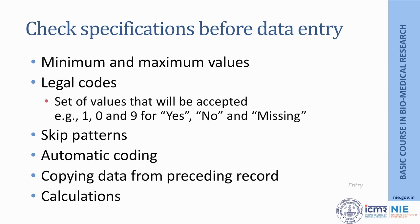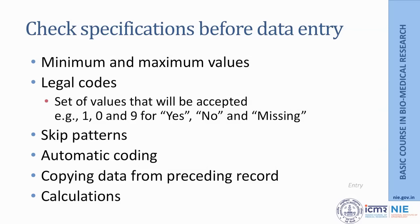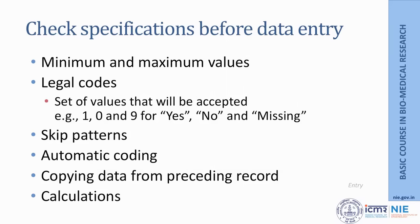Before data entry, one must ensure checks and balances, which is also very important for ensuring internal validity. You specify minimum and maximum values that can enter into a particular field. For example, if a study is about children up to 5 years, the age column will not accept anything more than 5 years at the time of data entry itself, minimizing errors. You may also specify skip patterns — for example, if someone says they do not exercise, you can skip all questions about type, frequency, and intensity of exercise. Automatic coding is also useful, as entering a code automatically denotes something referenced in the data collection instrument.